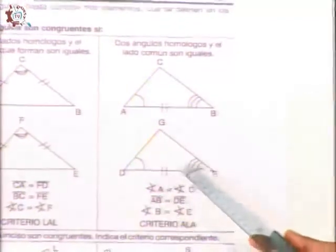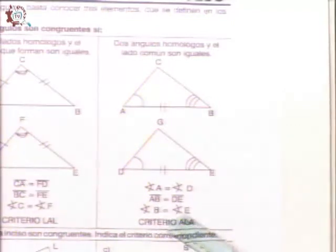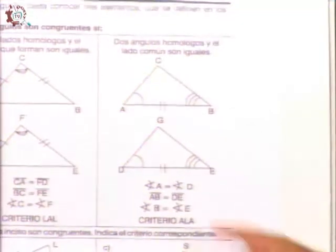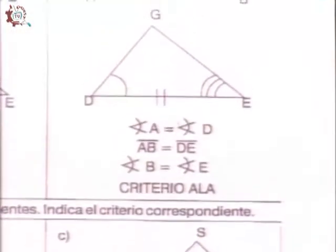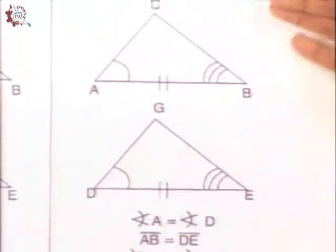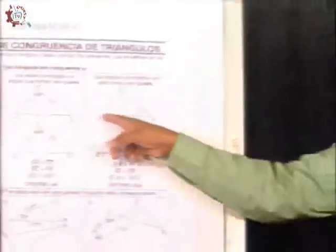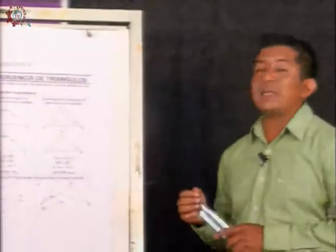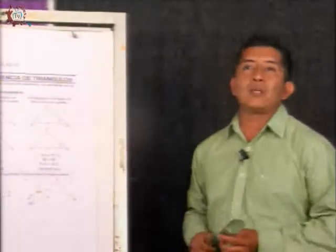El segmento que se forma entre ambos ángulos, que es el segmento AB, debe ser igual al segmento DE. El ángulo B debe ser igual al ángulo E. Este criterio recibe el nombre de ángulo-lado-ángulo, porque dos de sus ángulos deben ser iguales con respecto a uno y otro triángulo, y a su vez el segmento que se forma entre estos dos ángulos también debe tener la misma medida. Estos son los tres criterios de congruencia para los triángulos.